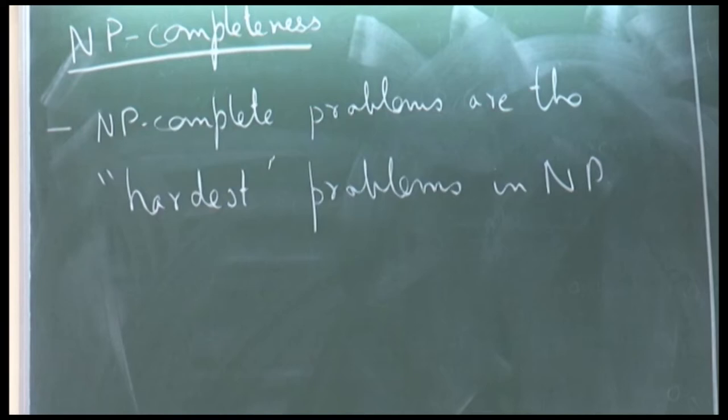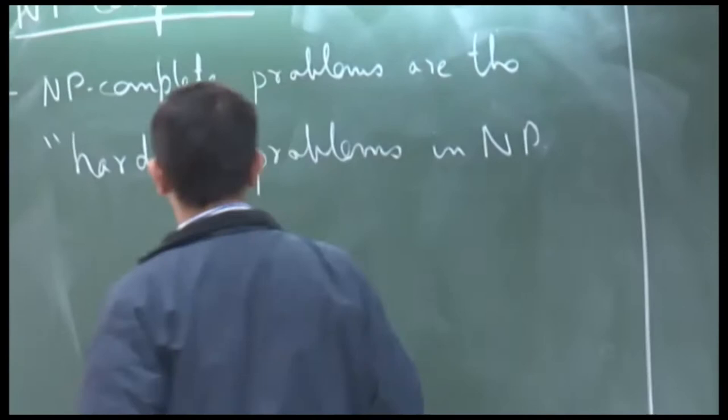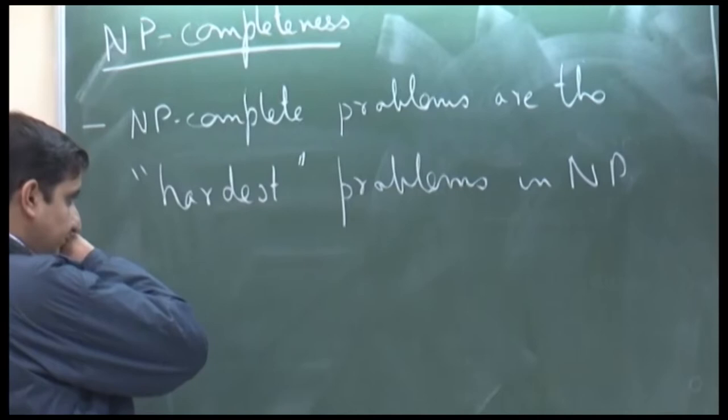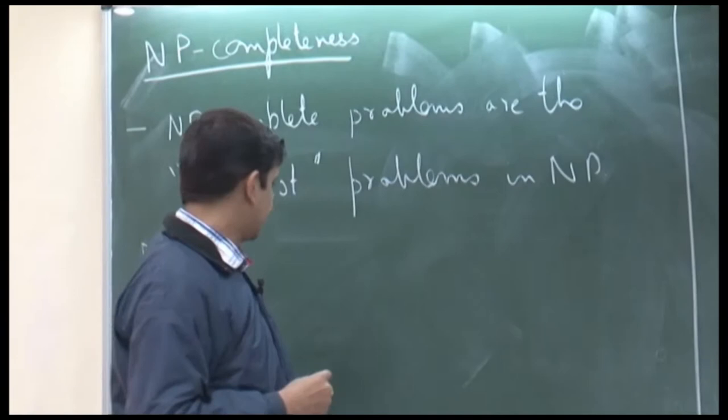Whenever we talk about hardness or easiness, we do so in relative terms. Something is hard means it is hard with respect to some other stuff. We need to define a notion of relativity here, and that comes from the notion of reductions. Let us look at reductions and formally define them.